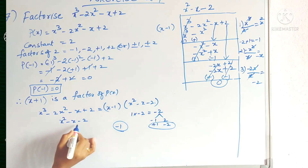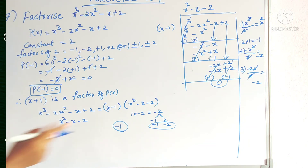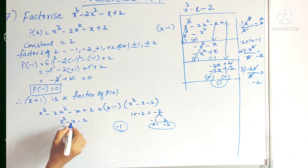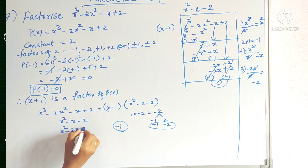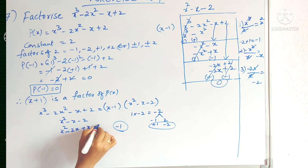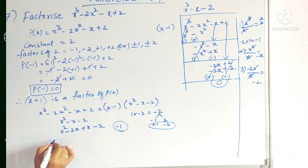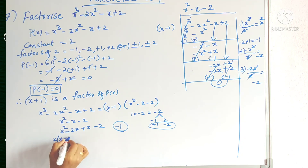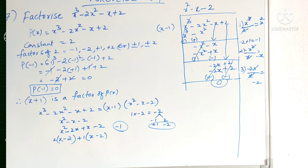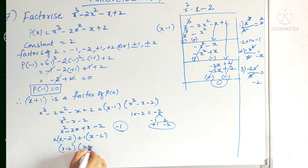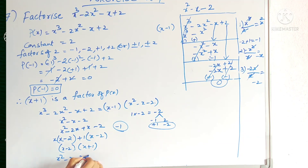So 1 and minus 2 give minus 1 when added. I am writing minus x as minus 2x plus x. Now x square means x into x. Taking x common: x(x minus 2), and plus 1(x minus 2). Since x minus 2 is common, take it out, and the remaining is x plus 1. So the factors of x square minus x minus 2 are (x minus 2) into (x plus 1).